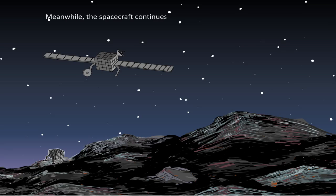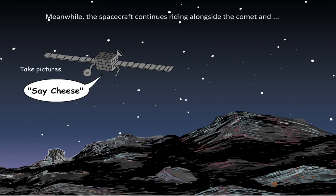Meanwhile, the spacecraft would continue riding alongside the comet and take pictures. Send radio waves inside the 4.8 kilometer comet.